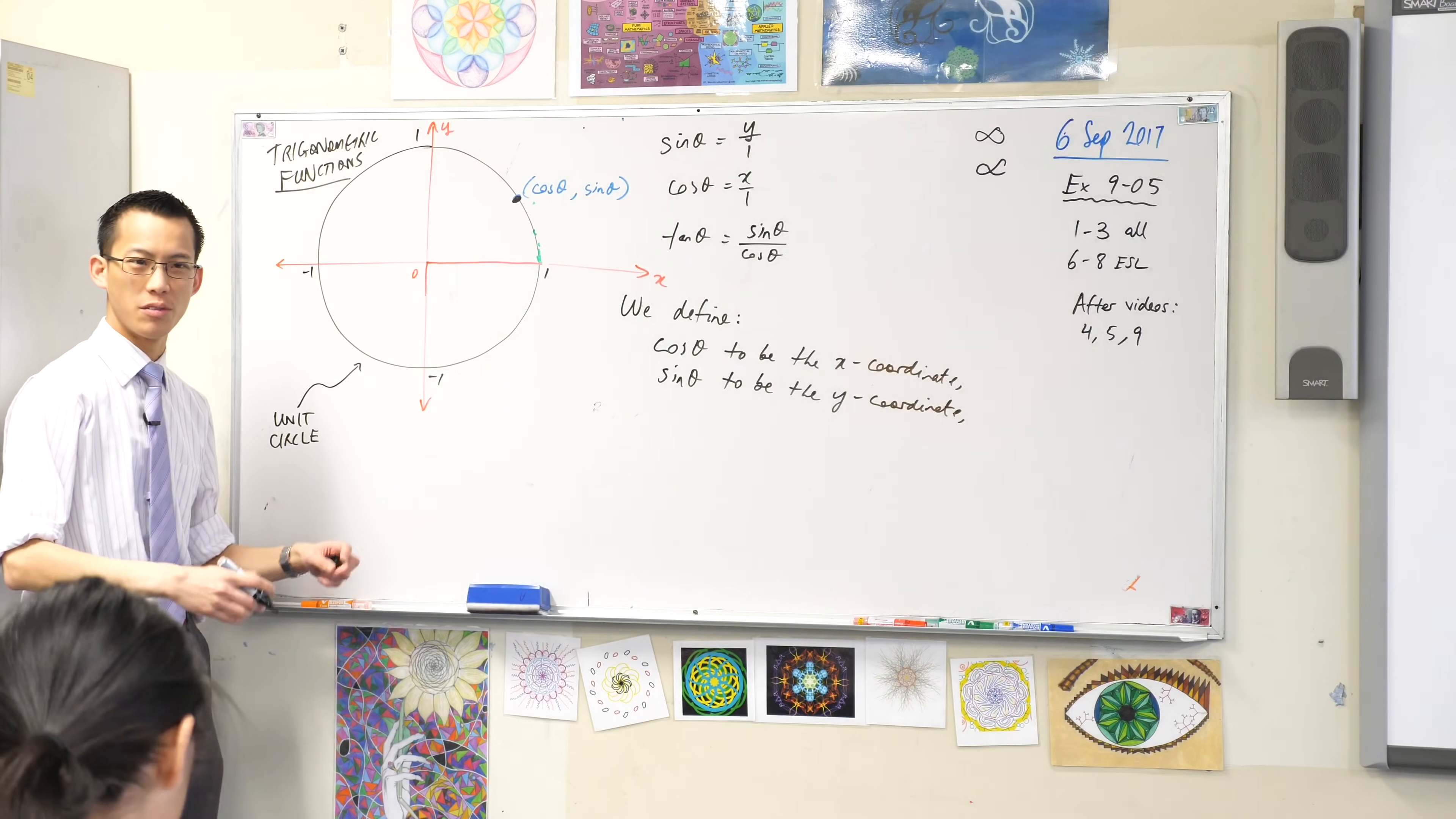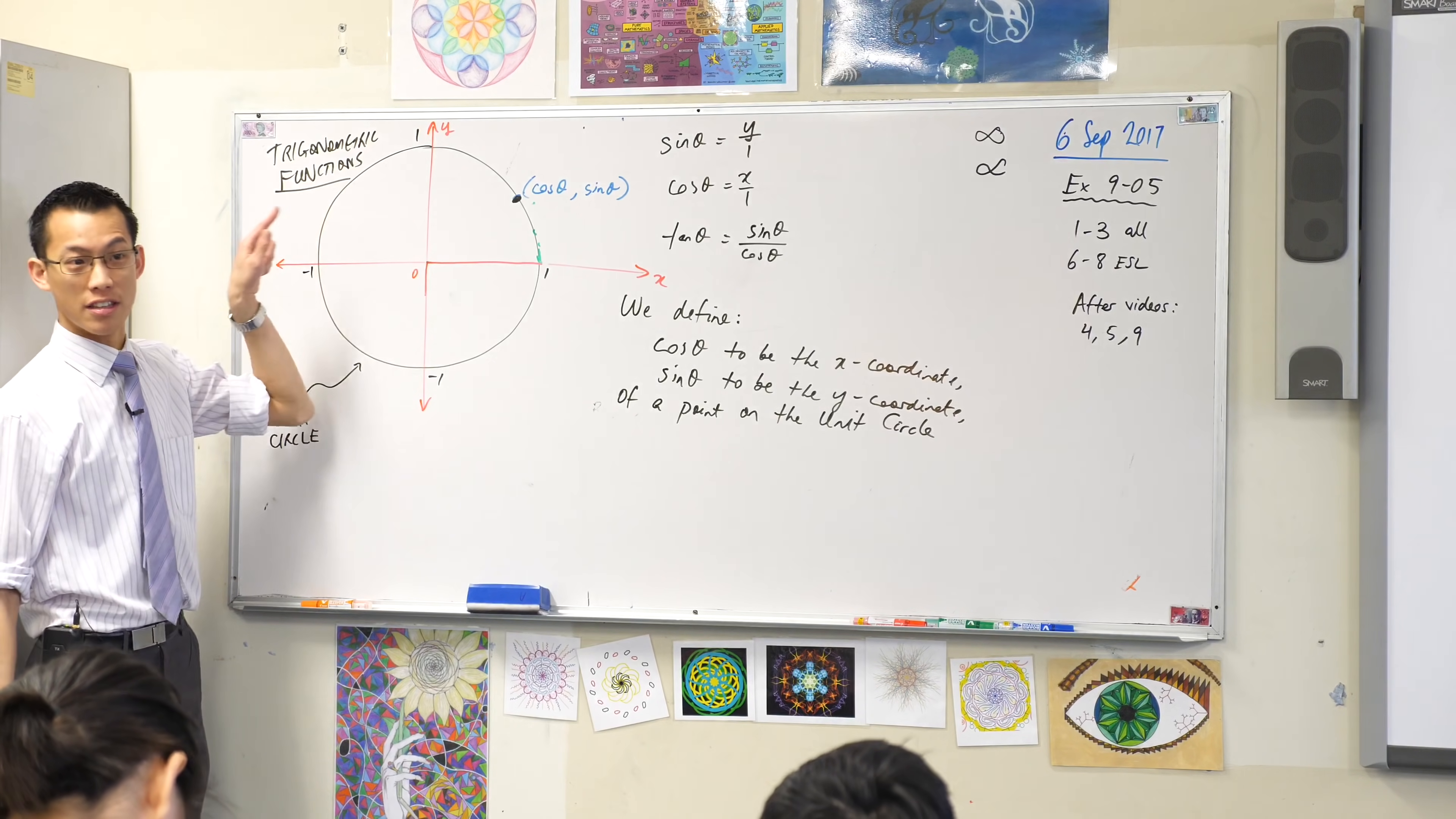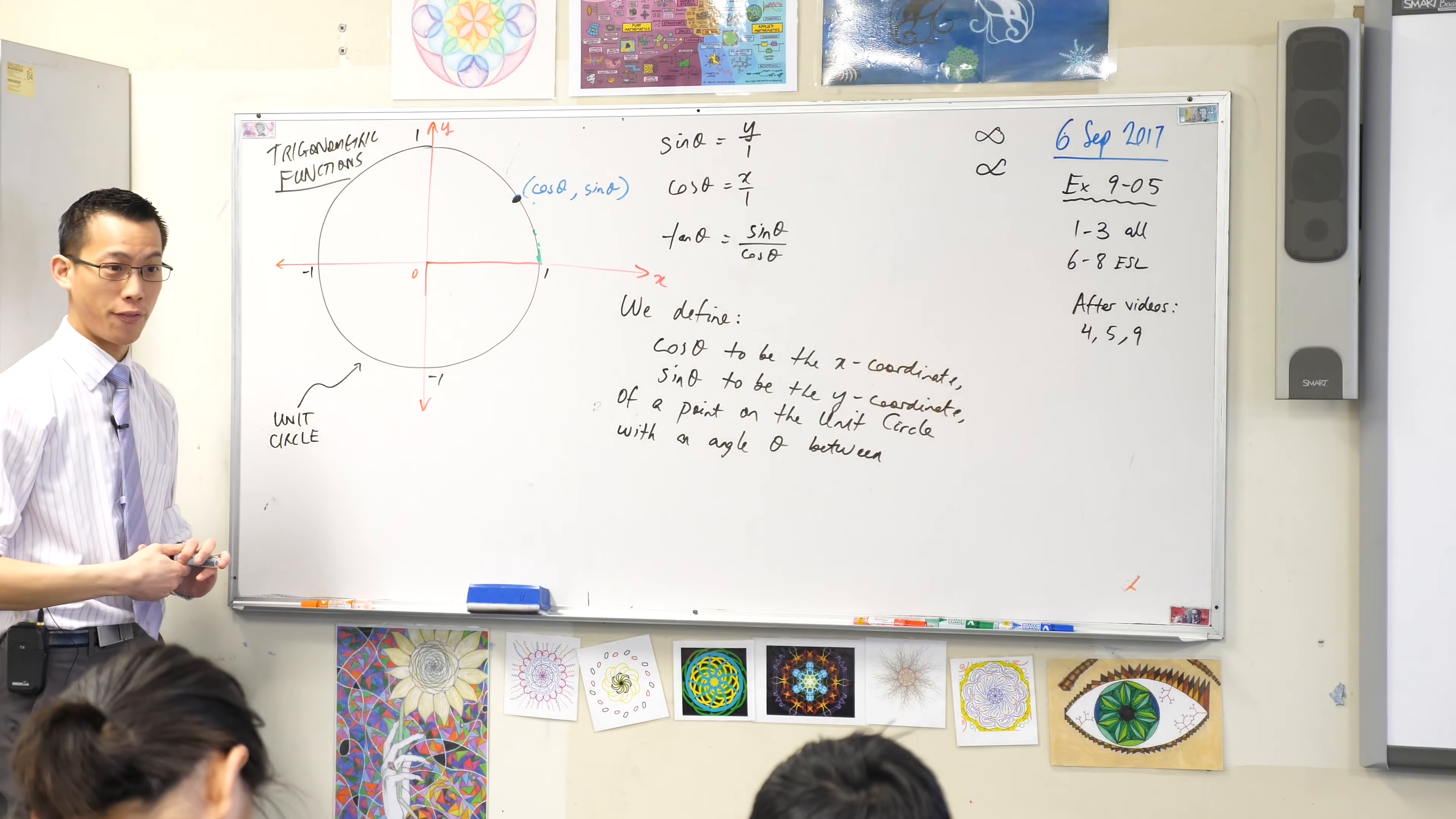Of what? The coordinates of what? Well, it's a point on this unit circle. Of a point on the unit circle. I'm going to capitalize unit circle just to emphasize it's a special kind of object. It has its origin at the center, center at the origin, and has a radius of 1. Of a point on the unit circle with an angle θ between.